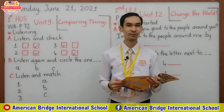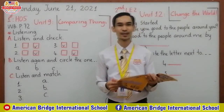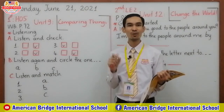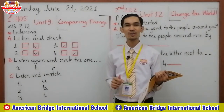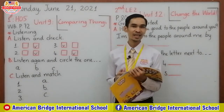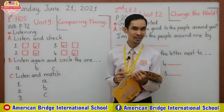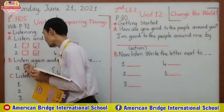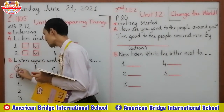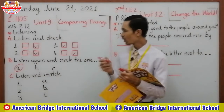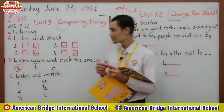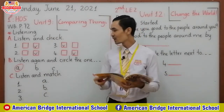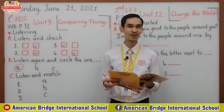Finish, everyone. Good job. So which mouse does the boy want to buy? It must be the orange mouse, right? So the correct answer is letter A, the orange mouse. So now I would like you to look at part C all together.